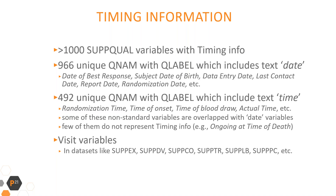Looking across 325 analyzed studies, you can find many examples of violations of CDISC SDTM conformance for implementation of SUPPQUAL datasets. Here are some examples of common SDTM mapping violations. There are more than 1,000 variables which represent timing information in SUPPQUAL datasets — 966 unique QNAM with QLABEL which include the text 'date', and 492 unique QNAM with label which include the text 'time'. Note that some of these non-standard time variables overlap with date variables, and a few do not represent timing information, like 'ongoing at time of death'.